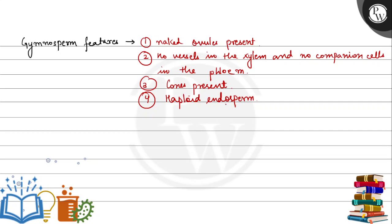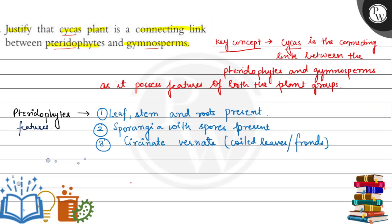Okay. To in ke paas kyunki gymnosperm ke features bhi hai aur pteridophytes ke bhi features hai, toh yeh in dono ka connecting link ban jayega. So that's it for the question. I hope you understood it well. Best of luck.